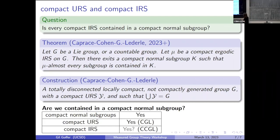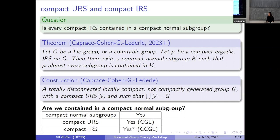So to summarize with the table from before: for compact URSs we can prove containment in a compact normal subgroup; for compact IRSs we're not yet sure what the right setting is for a full yes — that's what we're working on. Thank you.